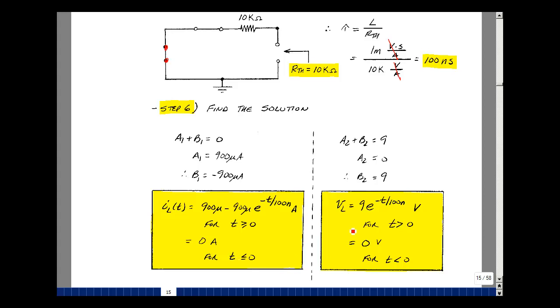Now the voltage across the inductance could be continuous, but it can also jump. In our case here, we had that A2 plus B2 was nine volts. And we found that A2 was zero. So B2 is then equal to nine. The voltage across the inductance is just nine e to the minus t over tau. And tau is 100 nanoseconds, true for t greater than zero. For t less than zero, we found that it was zero volts. When you plug in t equals zero here, you get nine. So we do have a jump. And so this is not continuous, but discontinuous at t equals zero. This is how you solve for an RL charging circuit.